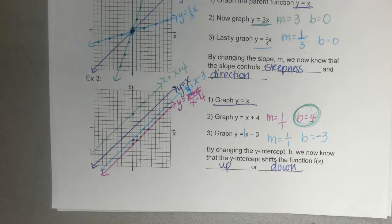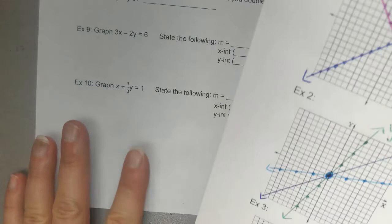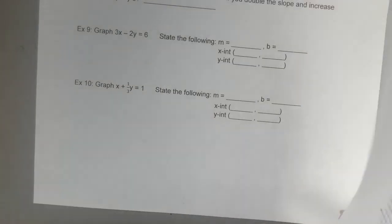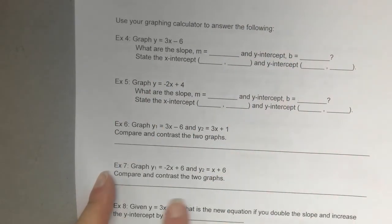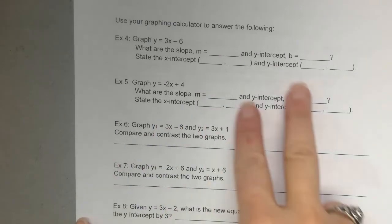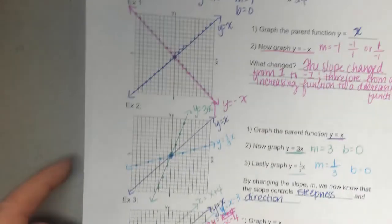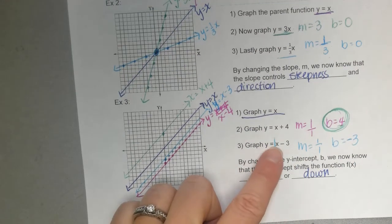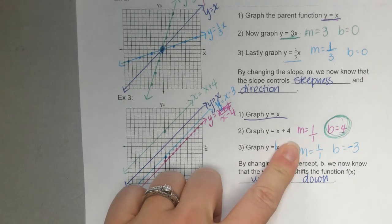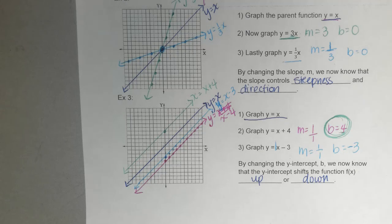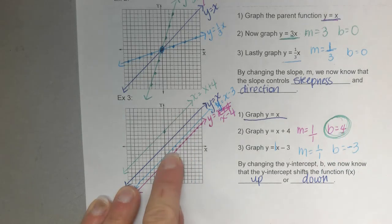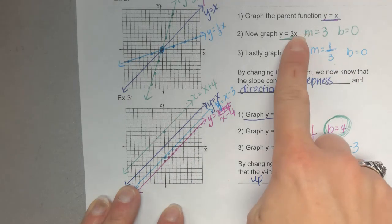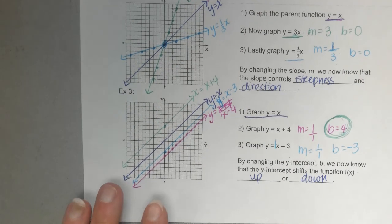So that y-intercept — when you change the y-intercept, it shifts the function. We're going to do the other page in class tomorrow using the graphing calculator, and we're going to talk about this before we do our homework. But make sure you're clear on how we got these lines graphed: the m, which is the slope, and the b, the y-intercept — how you start and graph a line, and the difference changing the y-intercept or the slope makes to the parent function. Alright, have a good night.